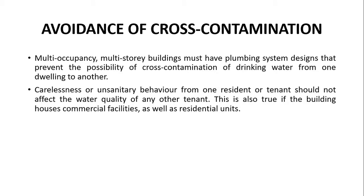Avoidance of cross-contamination is critical. In multi-occupancy and multi-story buildings, the plumbing system must not cross-contaminate the drinking water from one dwelling to another. Every apartment should have its own clean drinking water supply, and the drinking water supply for two apartments should never mix. We carefully design our plumbing systems to prevent this as much as possible. Carelessness or unsanitary behavior from one resident should not affect the water quality of any other tenant.